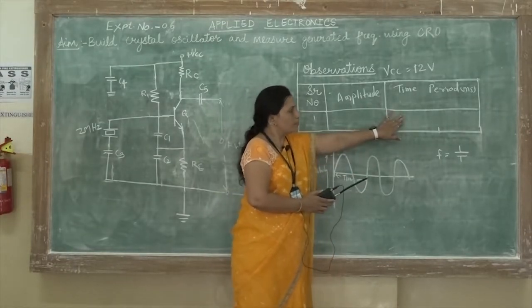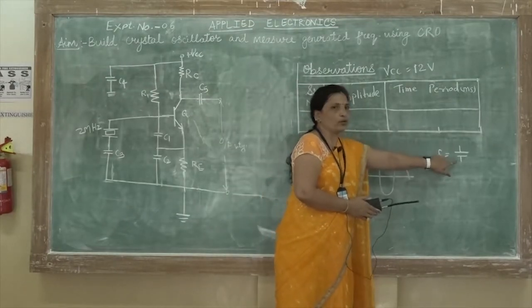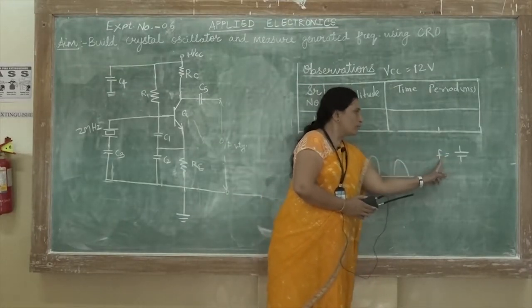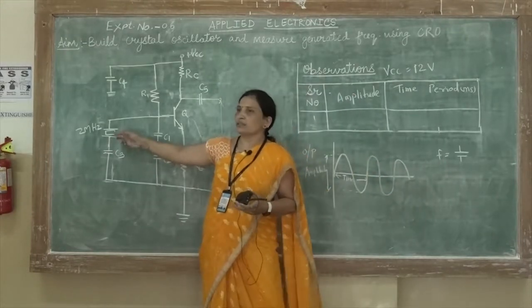After calculating the time period you have to calculate the frequency by the formula F equals 1 upon T and whatever your frequency getting at the output side that should be exactly equal to the frequency of the crystal.